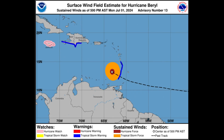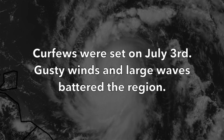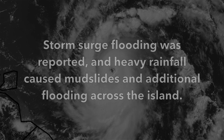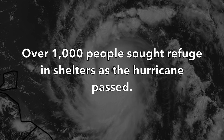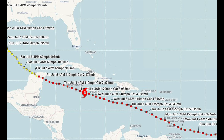On July 2nd, Jamaica was placed under a hurricane warning, and a state of emergency was declared in preparation for the approaching hurricane. Curfews were set on July 3rd. Gusty winds and large waves battered the region. Storm surge flooding was reported, and heavy rainfall caused mudslides and additional flooding across the island. Over 1,000 people sought refuge in shelters as the hurricane passed. On July 4th, the storm continued to weaken below major hurricane strength, as the storm's pressure began to rapidly rise. However, this weakening would be brief, as Beryl re-strengthened to a Category 3 hurricane later that day.